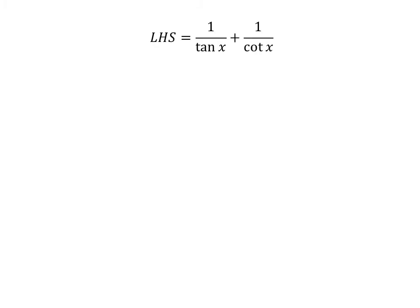Let us start from the left hand side of the identity. Left hand side of the identity is equal to 1 upon tangent of x plus 1 upon cotangent of x.